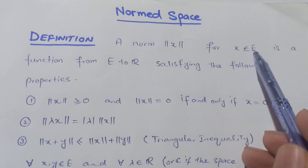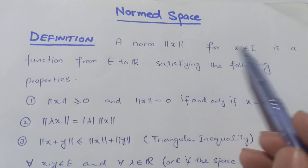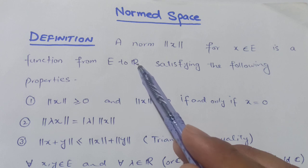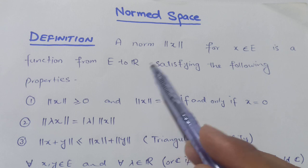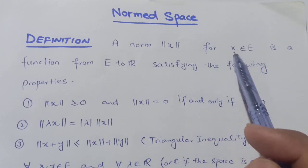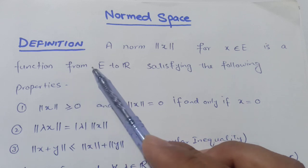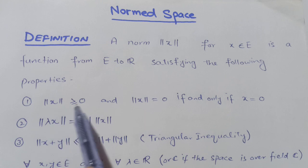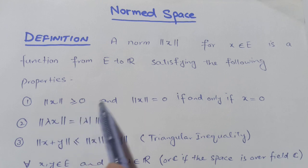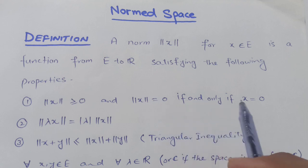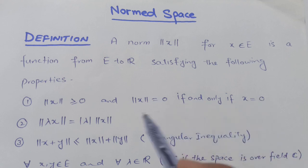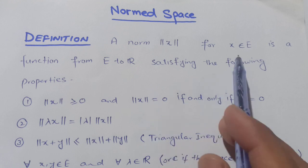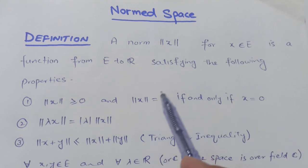A norm for X belongs to E, where E is a vector space over the field R or C. The norm is a function from E to R satisfying the following properties. First property: non-negativity — ||x|| ≥ 0, and ||x|| = 0 if and only if x = 0, where x is a vector, so ||x|| = 0 means x is the zero vector.